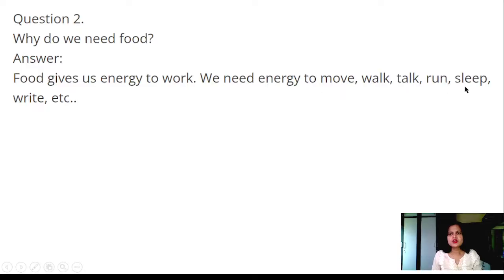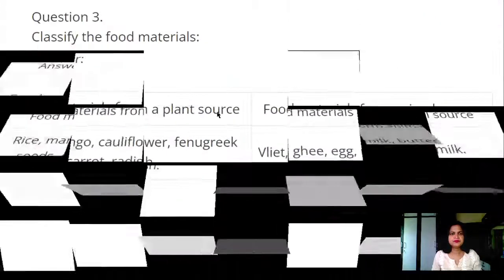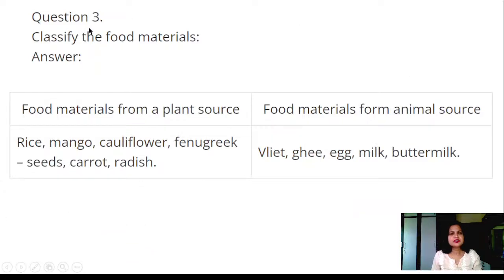Question 3: Classify the food materials. Answer: Food materials from plant source and food materials from animal source. Examples are rice, mango, cauliflower, fenugreek seeds, carrot, radish. Food materials from animal source: ghee, egg, milk, buttermilk, meat.